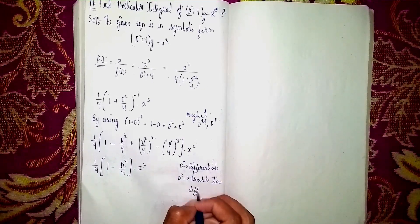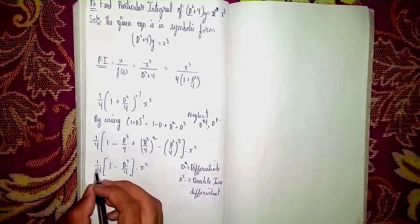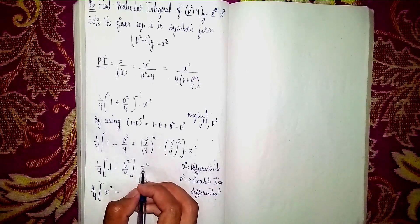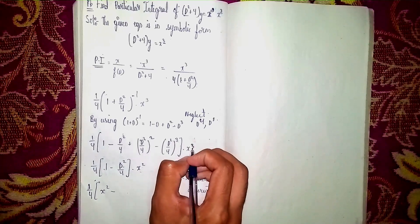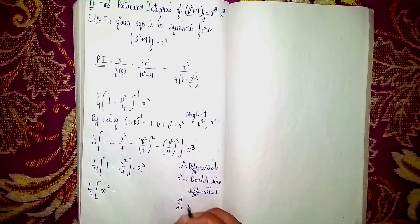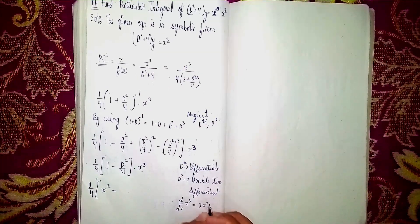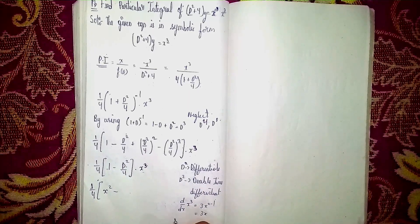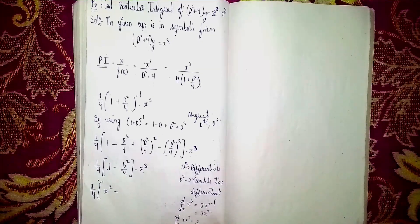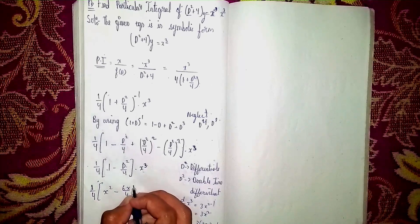Now applying D to x³: d/dx of x³ = 3x². Then D² of x³ means differentiating twice: d/dx of 3x² = 6x. So D²(x³) = 6x. Now substituting: (1/4)[x³ − (D²/4)(x³)] = (1/4)[x³ − 6x/4] = (1/4)[x³ − 3x/2].